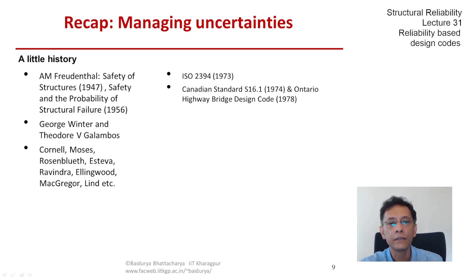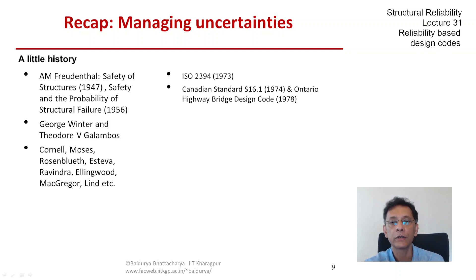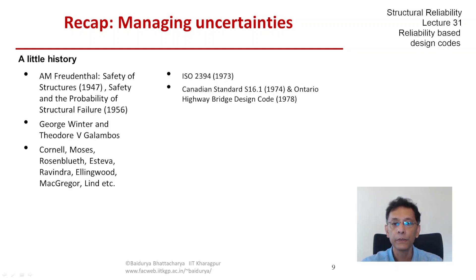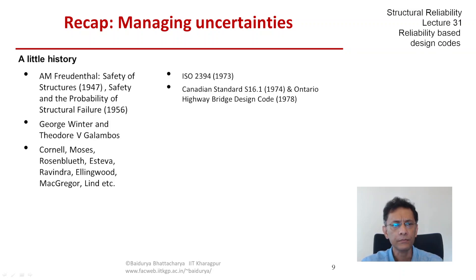ISO 2394, General Principles on Reliability for Structures, came into existence in 1973 and underwent three subsequent revisions, the most recent being 2015. One of the earliest reliability-based structural design codes in the world was the Canadian standard S16.1 of 1974 for limit design of steel structures. At the end of 1975, the Ontario Ministry of Transportation and Communications decided to develop a probability-based code for limit design of Ontario's highway bridges. The first edition of OHBDC, the Ontario Highway Bridge Design Code, was released in 1978, and its subsequent revision OHBDC 91 was replaced by the national standard CSA S6-00 in 2000.